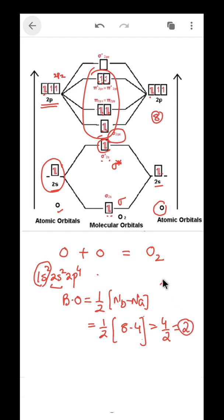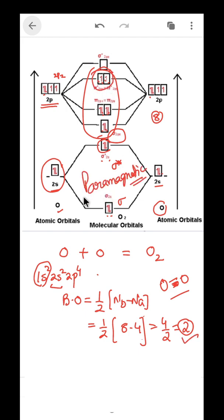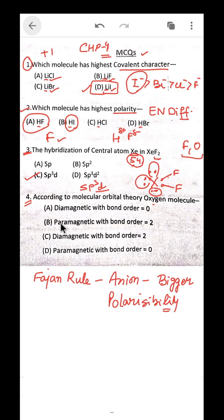There are 8 bonding electrons and 4 anti-bonding electrons, so bond order = (8 − 4) / 2 = 2. This confirms that oxygen has a double bond. Since there are unpaired electrons in the anti-bonding orbitals, oxygen is paramagnetic. So the answer is option B: paramagnetic with bond order 2.